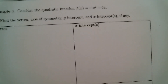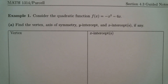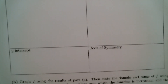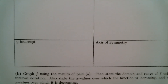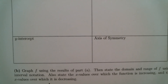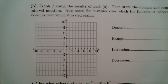Our goal is to graph this parabola by hand. In order to do that, we're going to find the vertex, the x-intercepts, the y-intercept, and the axis of symmetry. Then we're going to put all of those components together into the graph, and that will give us our parabola.